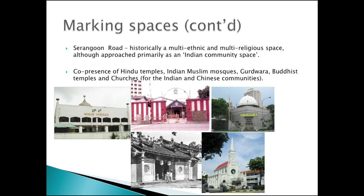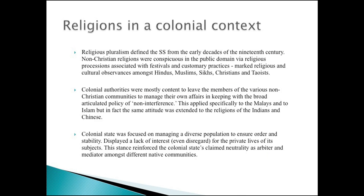Little India is a very plural space in the present, but this is not a new condition. From the mid 19th century it was a multi-ethnic and multi-religious space — initially an Indian Hindu-Muslim space, but there was also a Gurdwara, Buddhist temples along Racecourse Road, and churches for both Indian and Chinese communities, including the Fucha Methodist Church, Kampong Kapor Church, Our Lady of Lutes Church and Christ Church near Farrer Park. From the mid 19th century there has been a co-presence of different ethnic and religious groups within the area, so to continue to call it Little India is a bit of a misnomer.